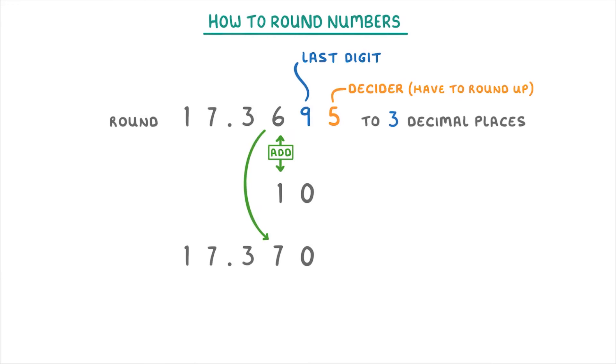Another way of thinking about it that you might find easier is to think of it as if we're rounding this 69 up to 70.